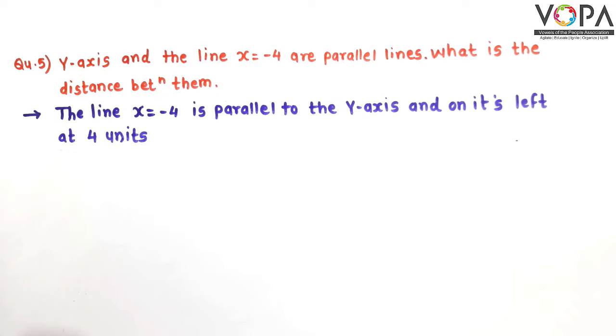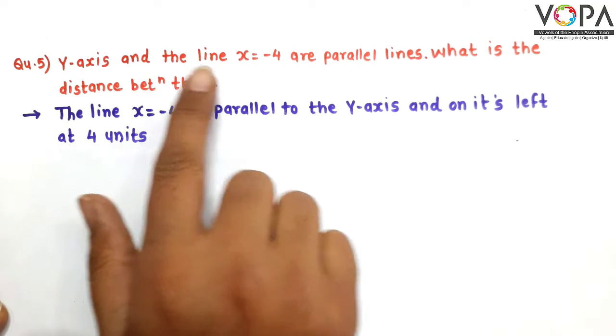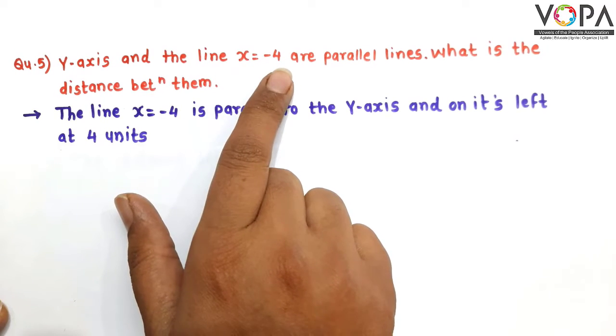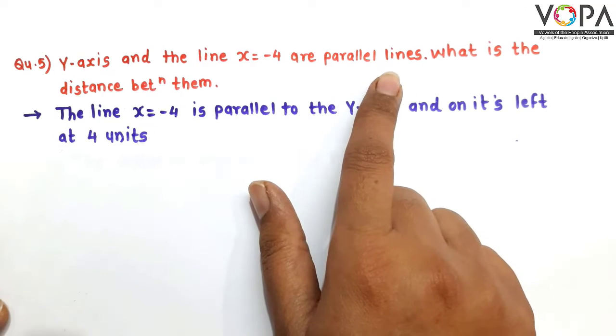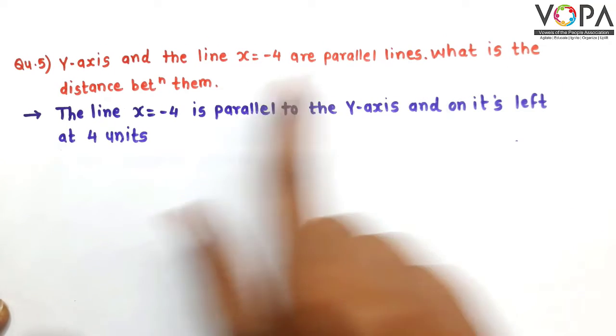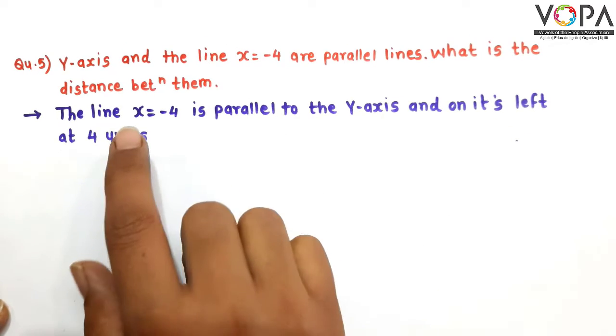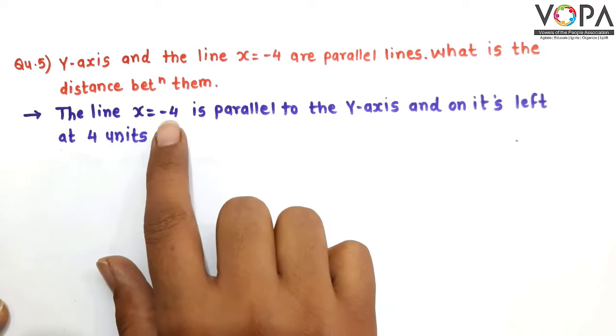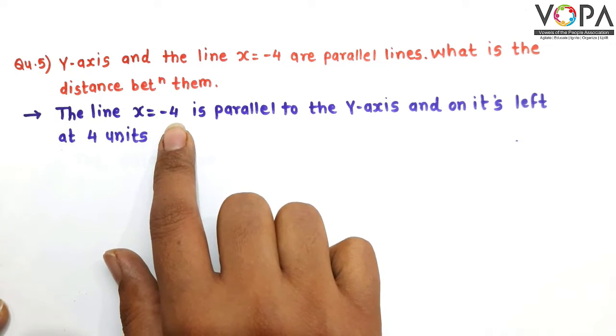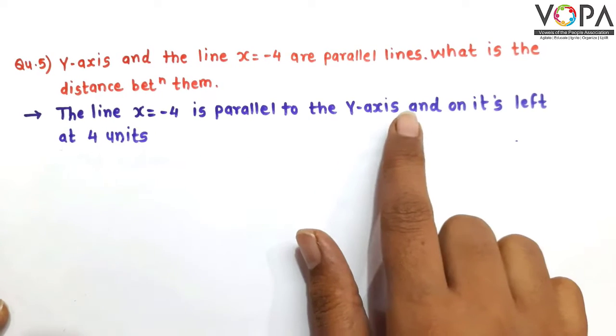Our next question is question number 5. Y-axis and the line x equals -4 are parallel lines. What is the distance between them? In this question, we are given that the line x equals -4 is parallel to y-axis.